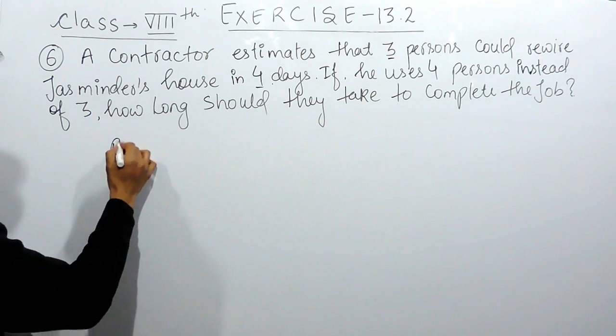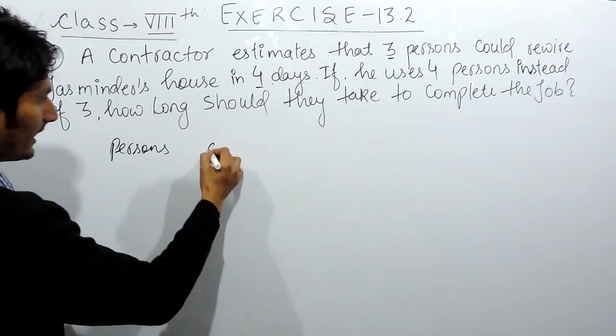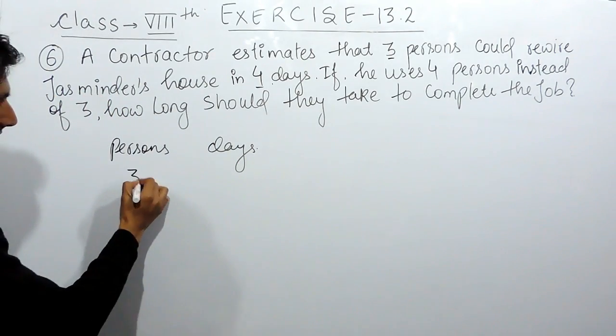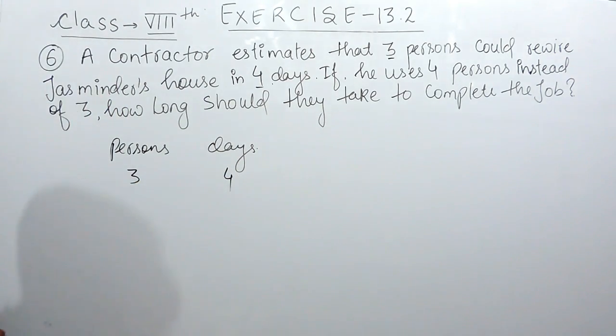So, the first is persons and the second is days. It is given that 3 persons can do a certain piece of work in 4 days. You have to find,